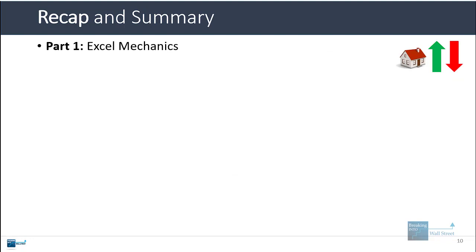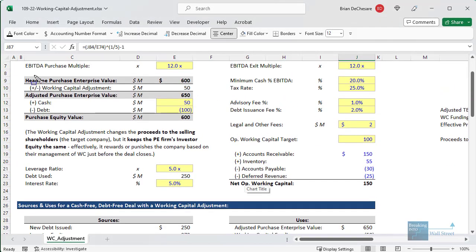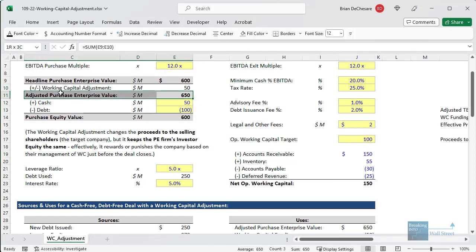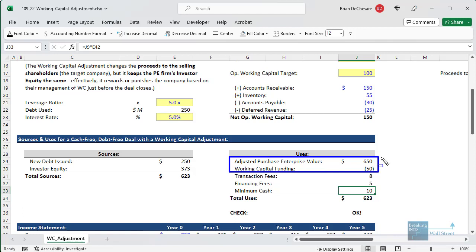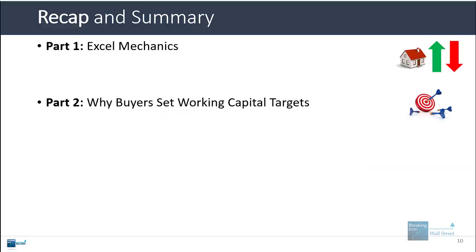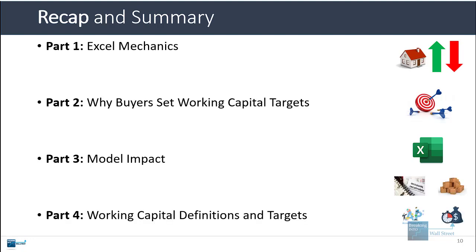Quick summary: the Excel mechanics are simple — you look at working capital versus the target, make the adjustment, and get the adjusted purchase enterprise value. Above the target it goes up; below the target it goes down. This affects proceeds to shareholders. In the sources and uses schedule, you record the adjusted purchase enterprise value and the working capital funding — positive or negative — but their sum always adds up to the same effective price. Buyers set these targets to prevent sellers from manipulating their business before closing. In a simple cash-flow-only model, the impact is minimal; you mainly see it in sources and uses.